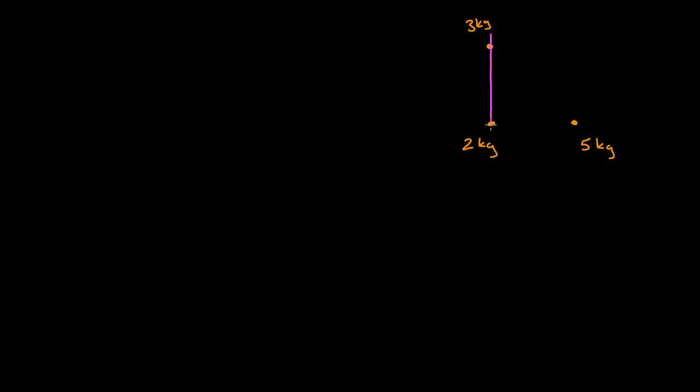Let's do a short example. Imagine I have three masses on corners of a square, each 4 meters apart. This one has a mass of 3 kg, this one has a mass of 2 kg, and this one has a mass of 5 kg. I want to know where the center of mass of this system is. First, we have to set up a coordinate system because the center of mass is a position vector, and a position vector is measured relative to a coordinate system. I'm going to put my origin at the 2 kg mass, with x going in that direction and y going up. The masses are 4 meters apart in each direction.